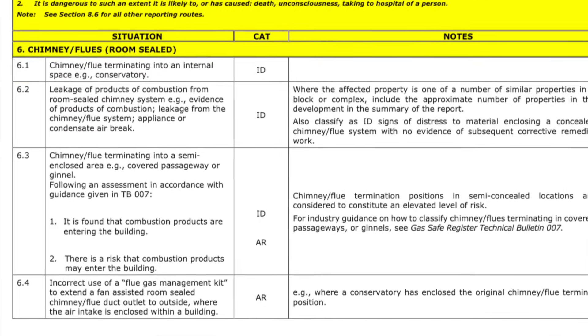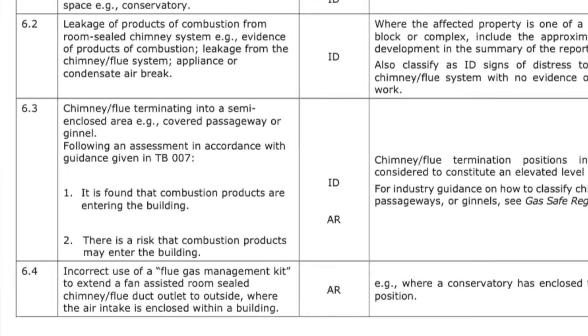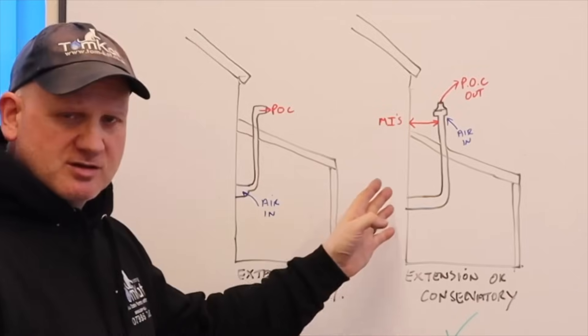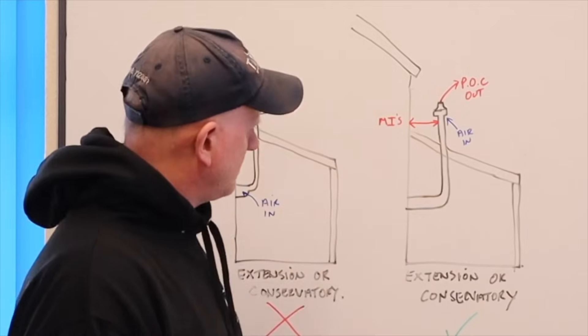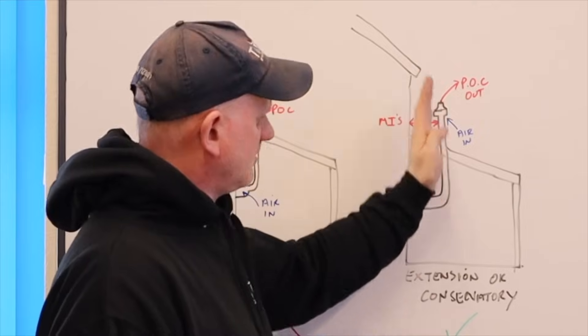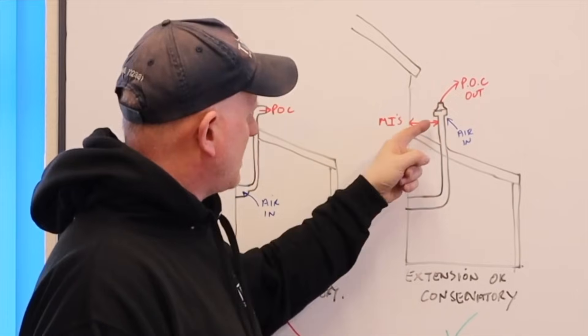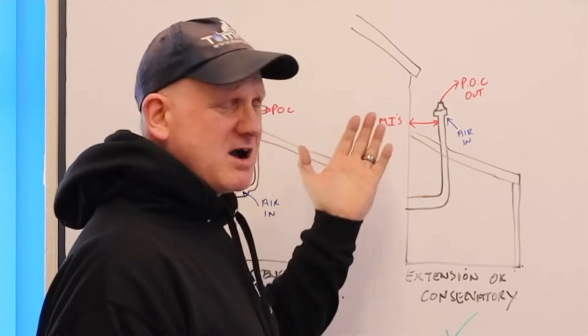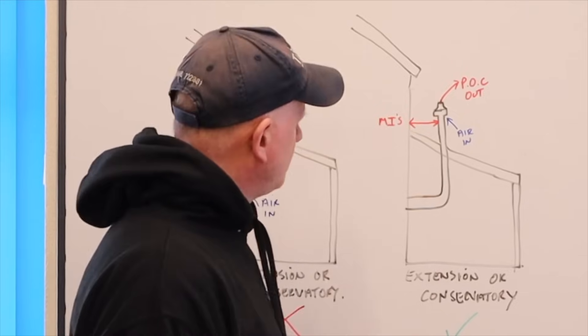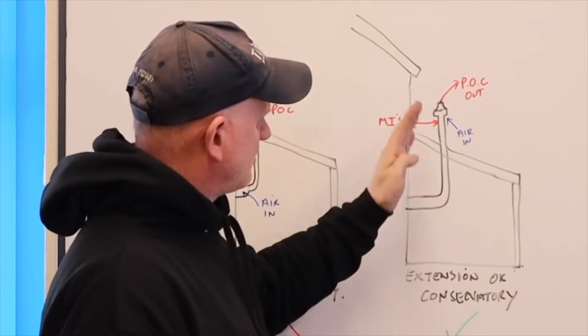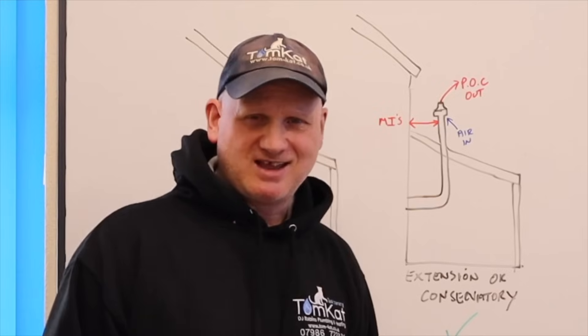That would be classed as at risk, under iGEM G11, the unsafe situations procedure. But, this is what you would have to do. You would have to take the flue through on a vertical flue system and you would have a distance of whatever the manufacturer's instruction says. Now, I've seen this as little as 300 up to 1,500. So, you would follow the manufacturer's instructions and you would use a vertical kit.